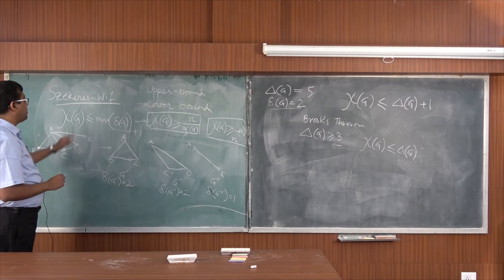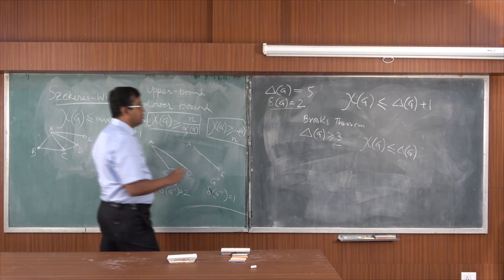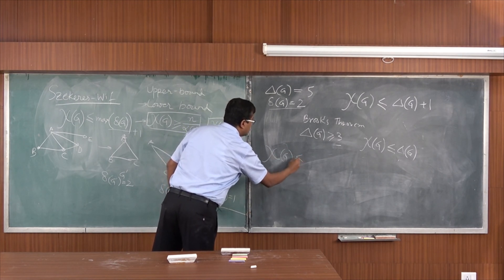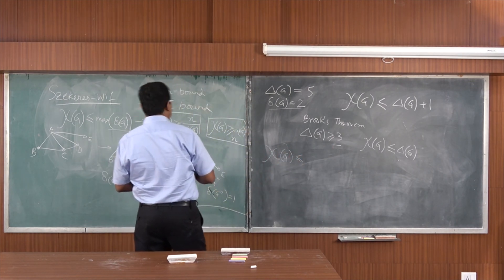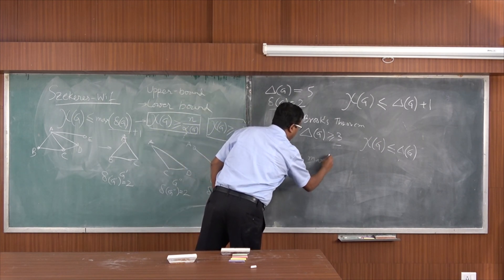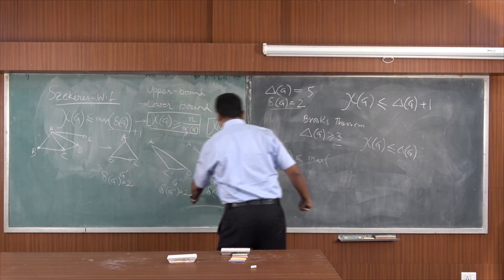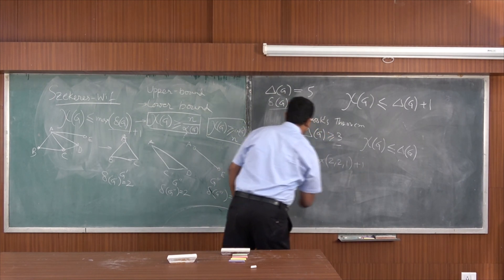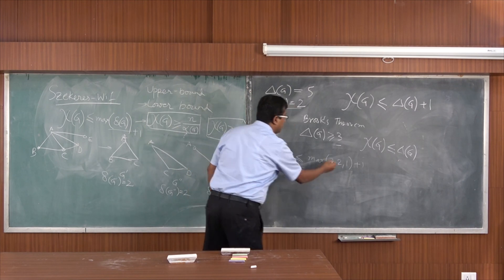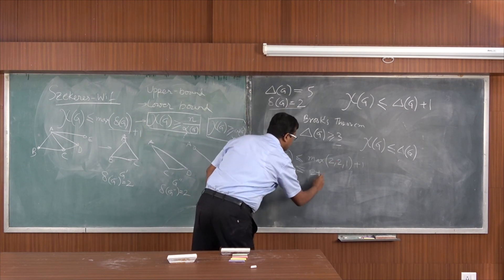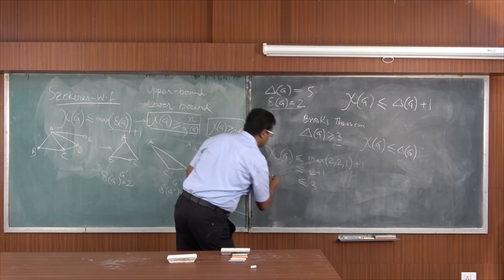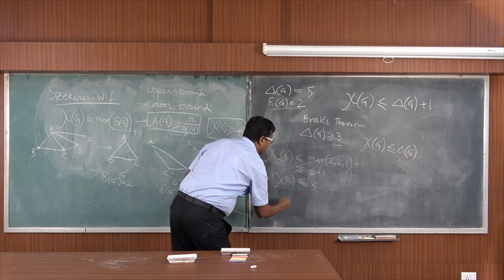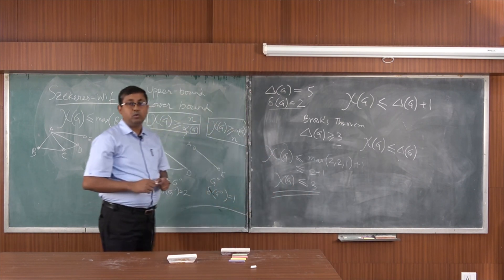Applying the Szekeres-Wilf theorem, we conclude that χ(G) ≤ max(2, 2, 1) + 1 = 2 + 1 = 3. So χ(G) ≤ 3 as per the Szekeres-Wilf theorem.